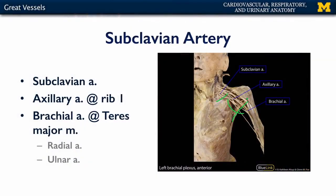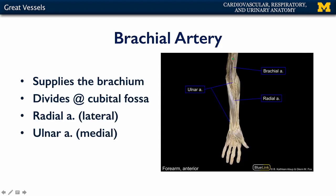Towards the distal brachium, the brachial artery bifurcates into its terminal branches, which are the radial and the ulnar arteries. The radial artery supplies the lateral forearm with blood, and the ulnar artery supplies the medial forearm with blood.